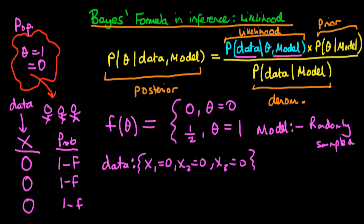That's the first part of the model. The second part of the model is F of theta — the way in which the infected status of the tribe actually influences the probability of an individual being infected. Given the data and the model, we can put these two things together and formulate the likelihood.